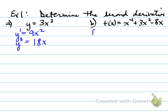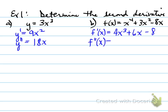Part b: we do the first derivative of f at x, and that gives us 4x cubed plus 6x minus 8. Now we take the second derivative, and that gives us 12x squared plus 6.